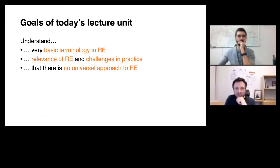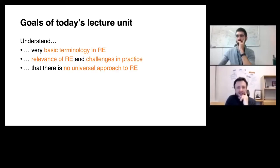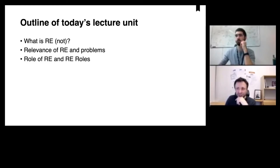So what are the goals for today's lecture? We will be focusing essentially on three things. Number one is the very basic terminology on requirements engineering — what is requirements engineering, what is it not? We will be talking about the relevance of requirements engineering and challenges encountered in practice, so why is it so important? And we will motivate that there is no universal approach to requirements engineering, and why we will be doing things in our course the way we do them with this artifact-centered reference model.